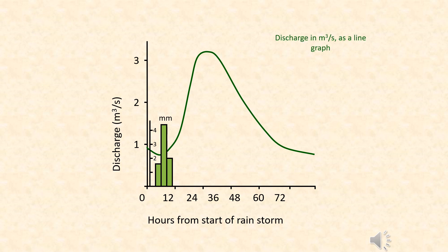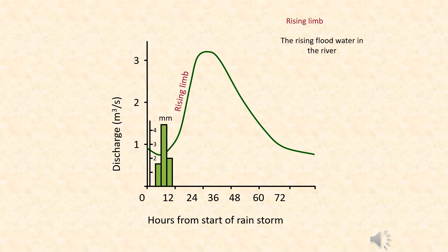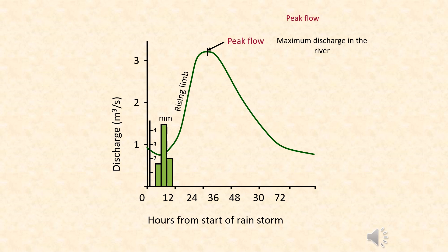We then plot the river discharge, which is represented by a U-shaped line graph. The first part is the rising limb — the rising level of water entering the river, either through overland flow, through flow, or groundwater flow. The top of the graph is the peak flow: the maximum discharge of the river, and possibly the point where the water breaks the river banks and we get a flood.